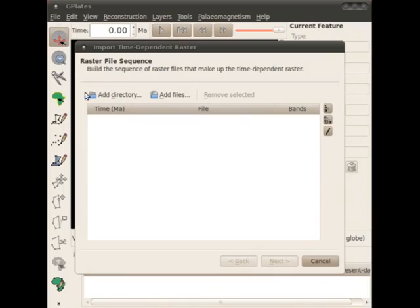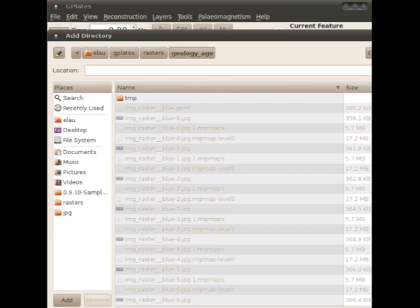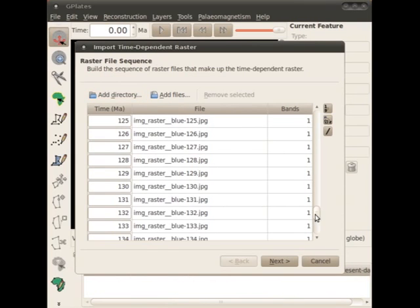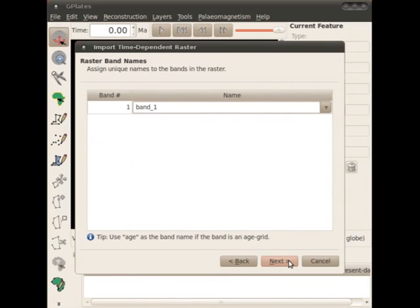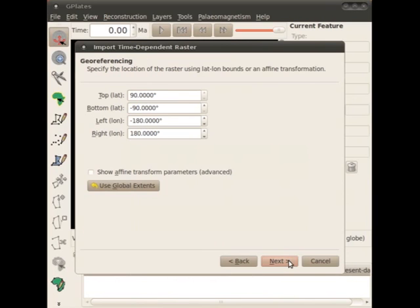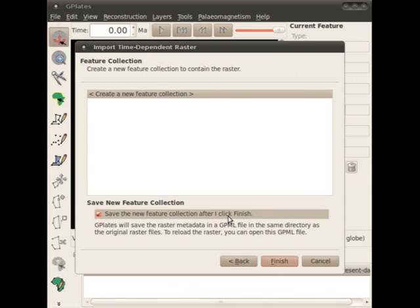Powerful yet easy to use, the new import raster dialog takes you through the process of bringing rasters into GPlates. GPlates now handles multiband rasters, and you can also specify georeferencing. To save you time, all of this raster metadata is saved in a GPML file.